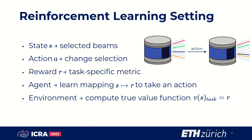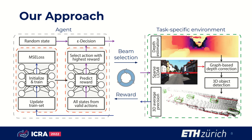We train an agent to learn a mapping from the state to a reward that represents the performance of the target task. In our approach, the agent uses a small neural network to iteratively refine this learned mapping. The agent selects a certain beam configuration, then the task-specific environment computes the performance for this selection with respect to a given metric. Finally, the agent leverages the newly gained knowledge to retrain its neural network.